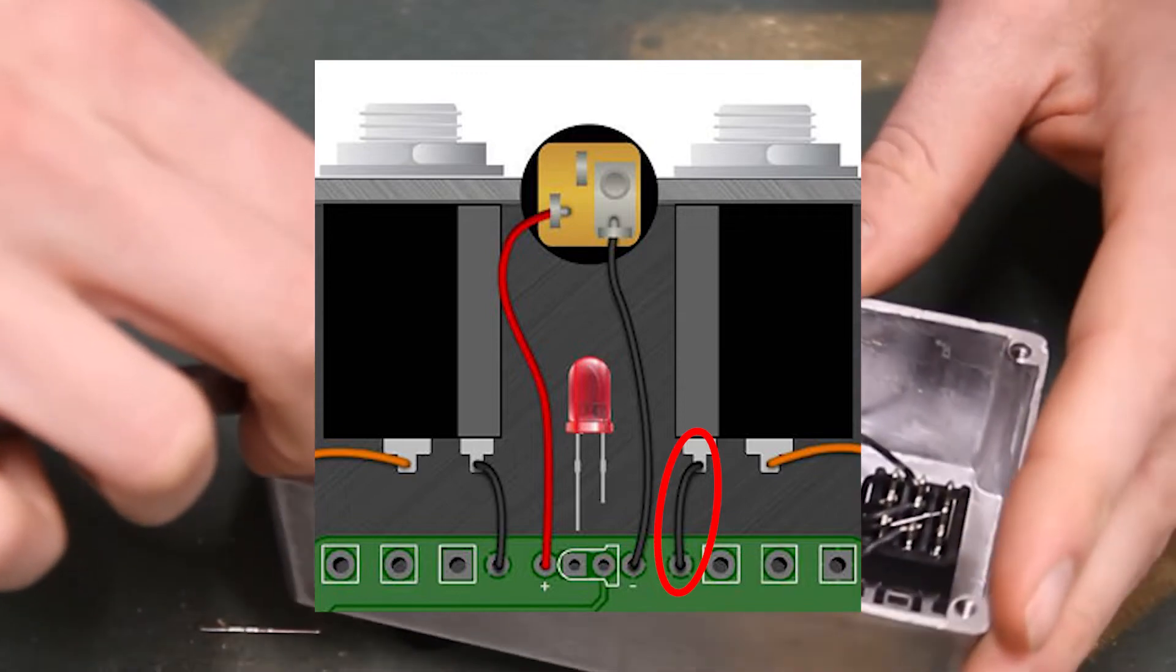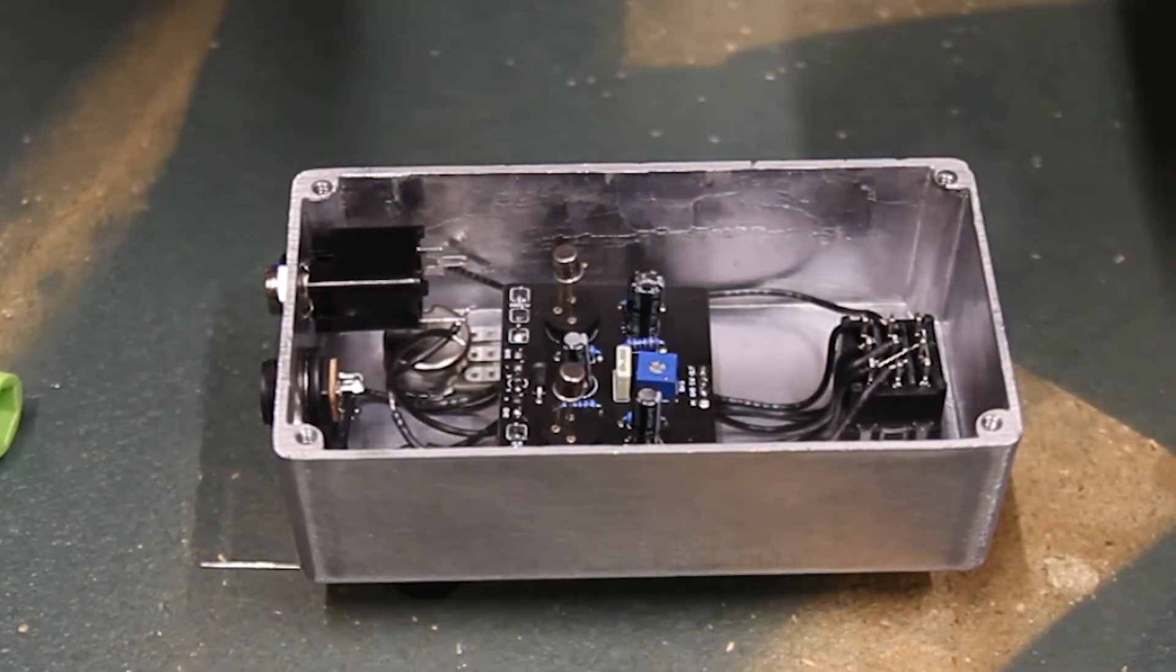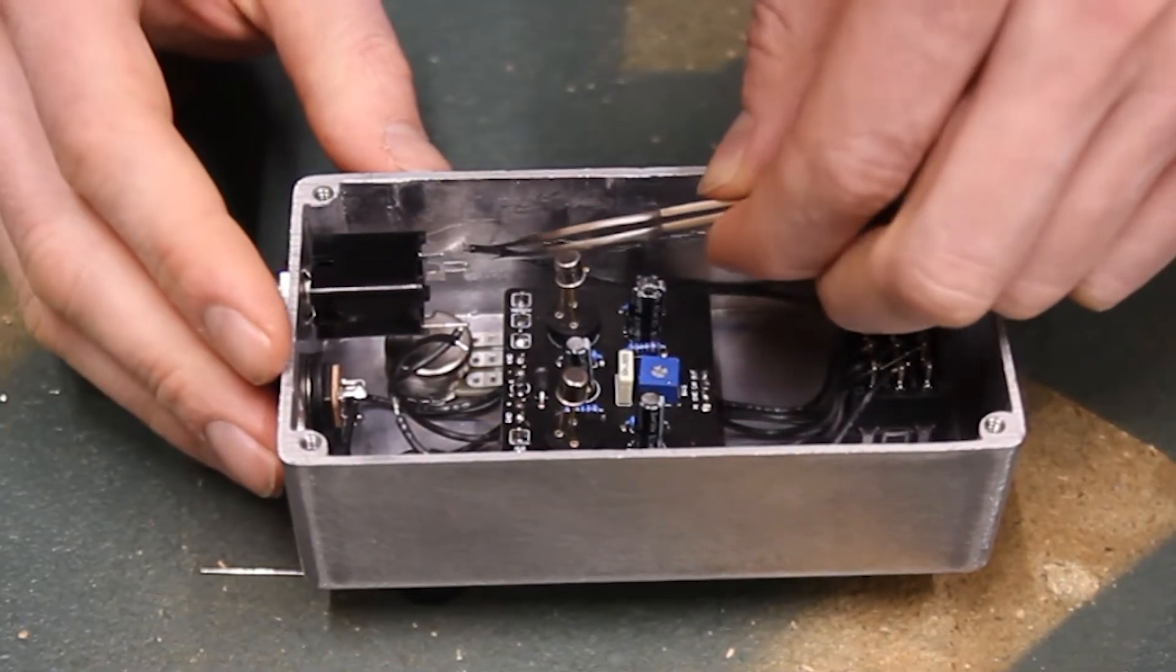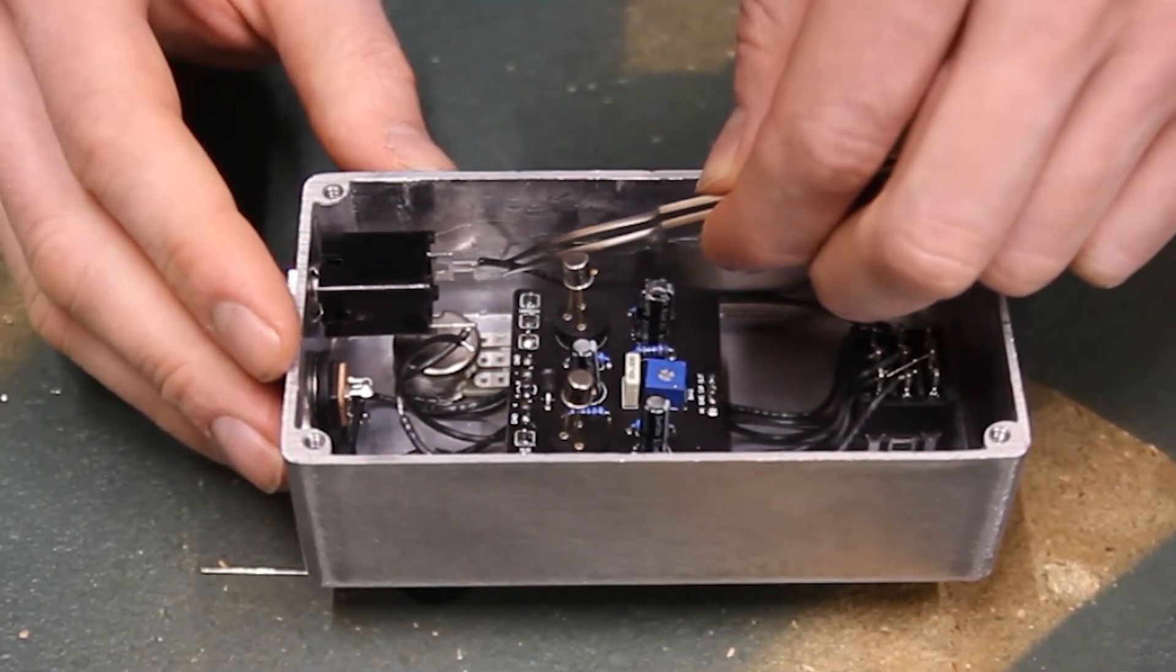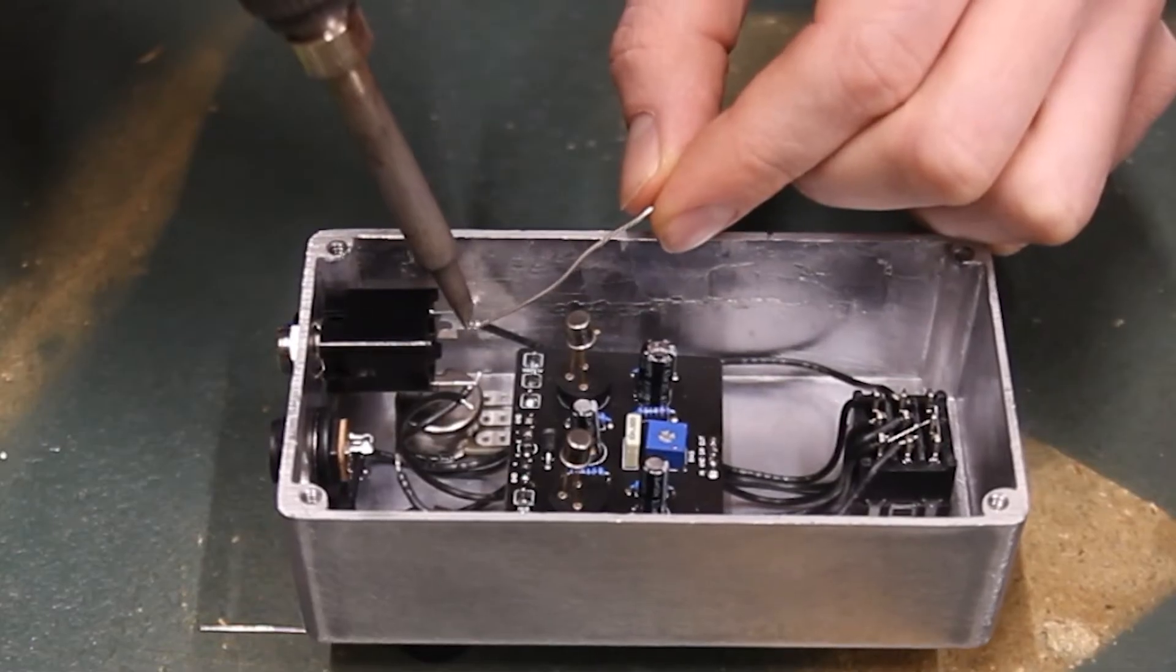Grab the ground wire from the PCB and poke it through the slanted lug on the jack. Solder it in. Now move on to the wire from the switch on the same side the jack is on. Put the end of the wire through the lug on the straight side of the jack and solder it in.